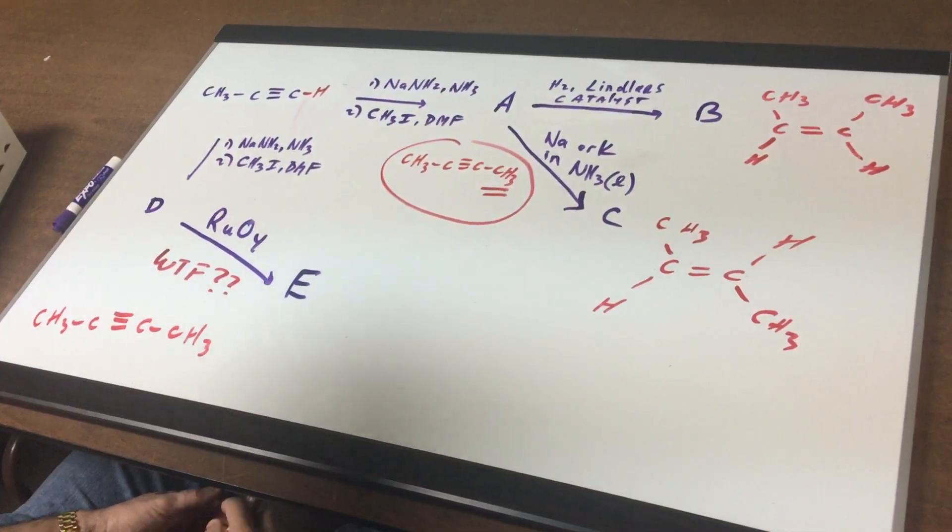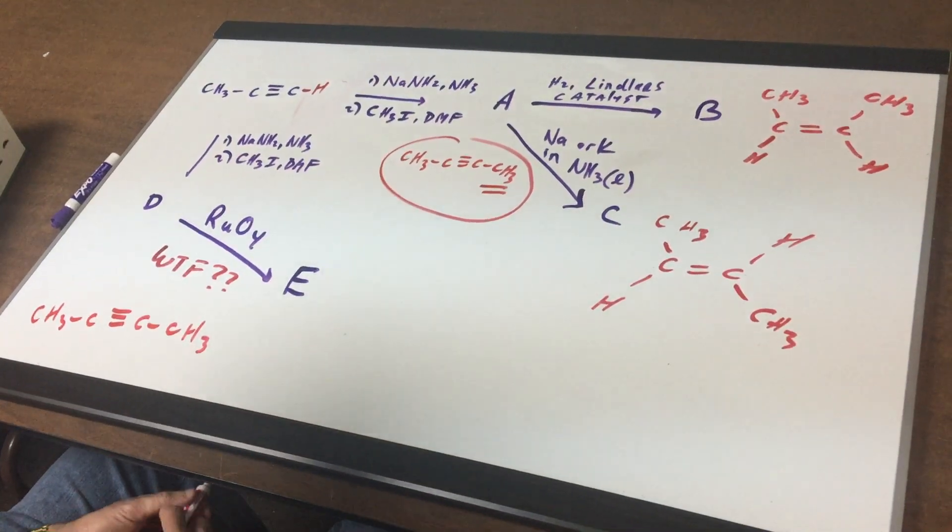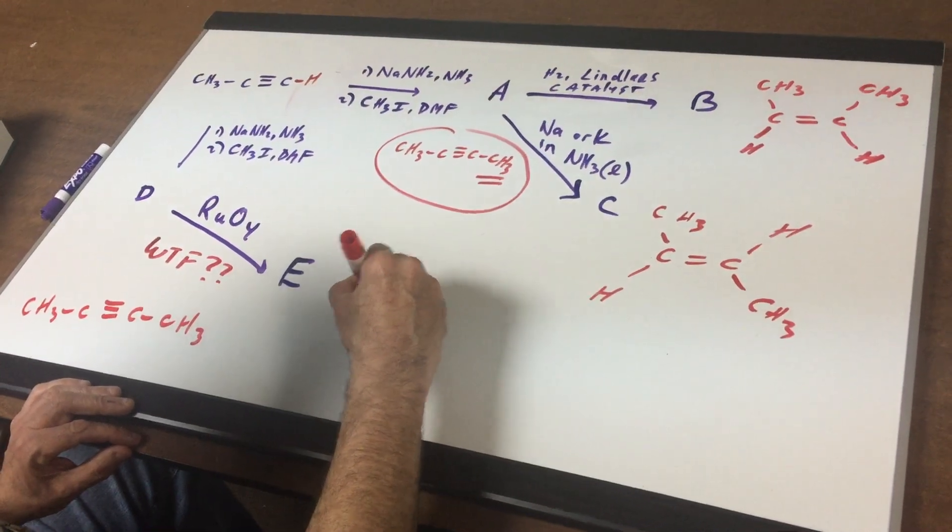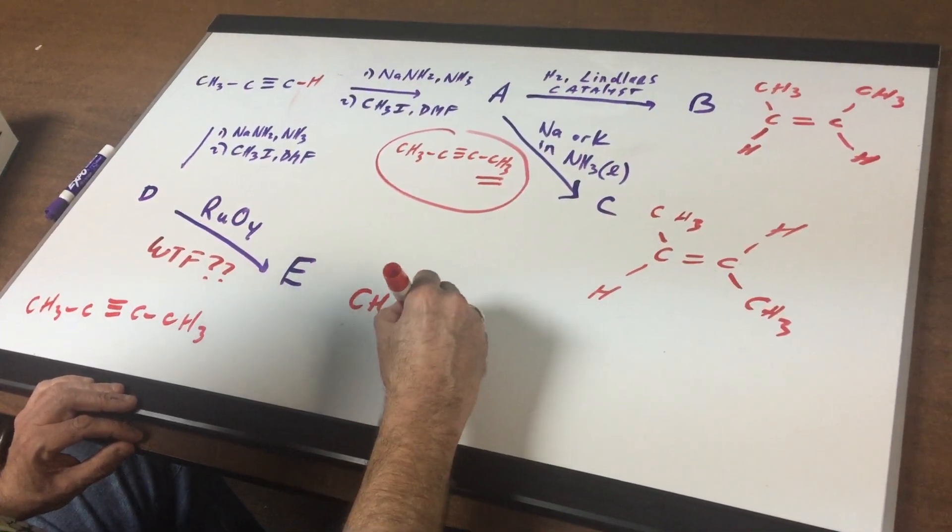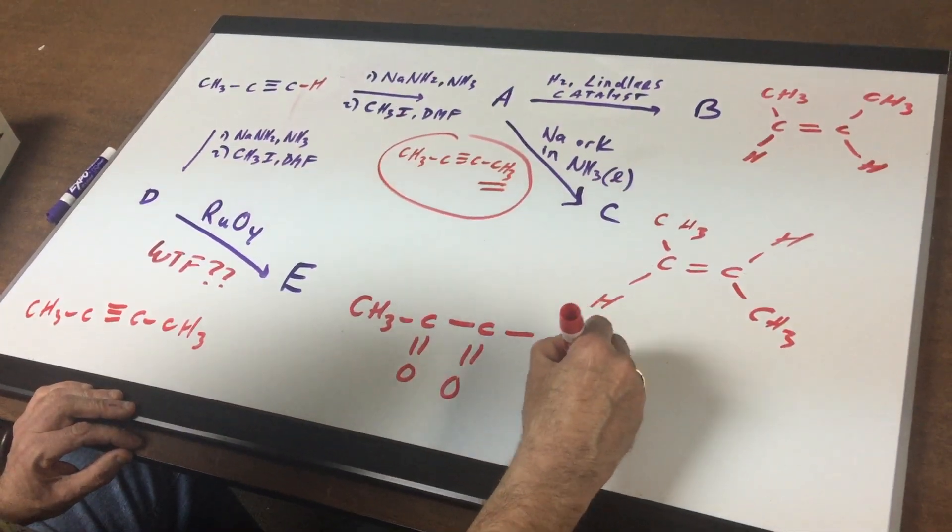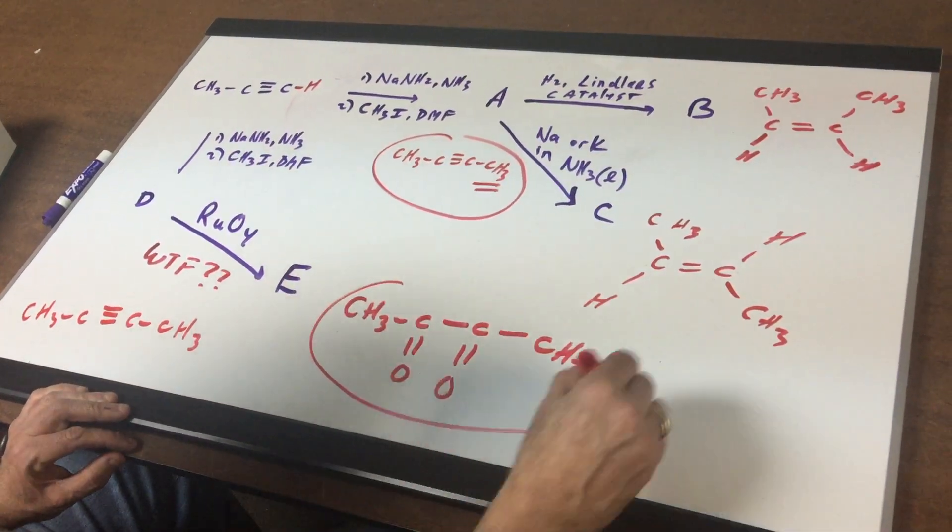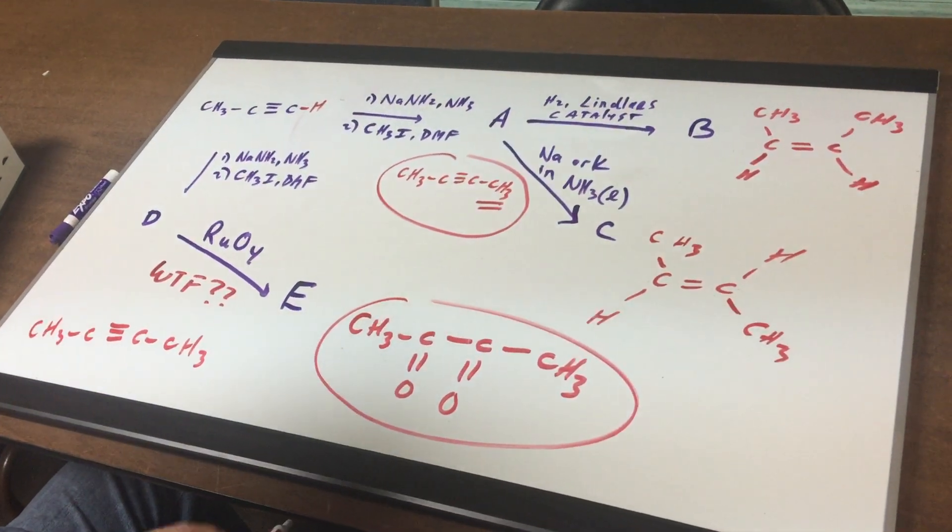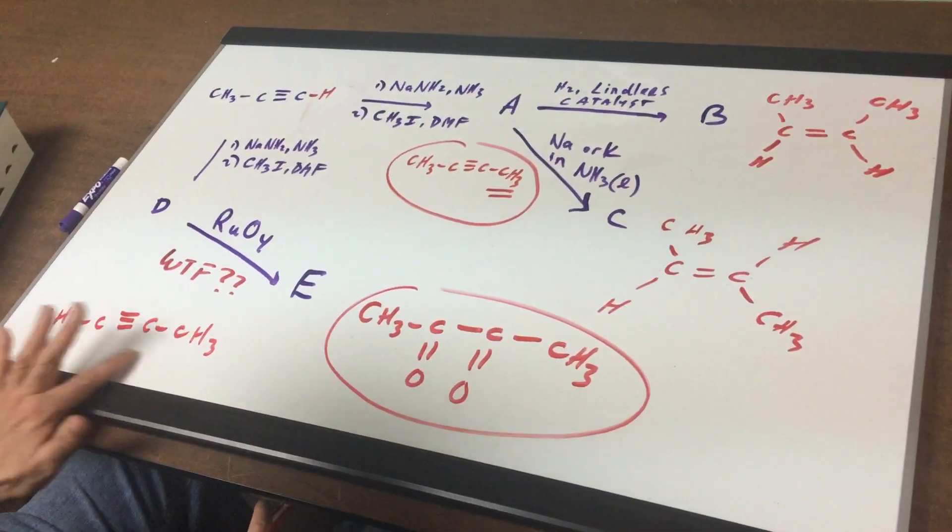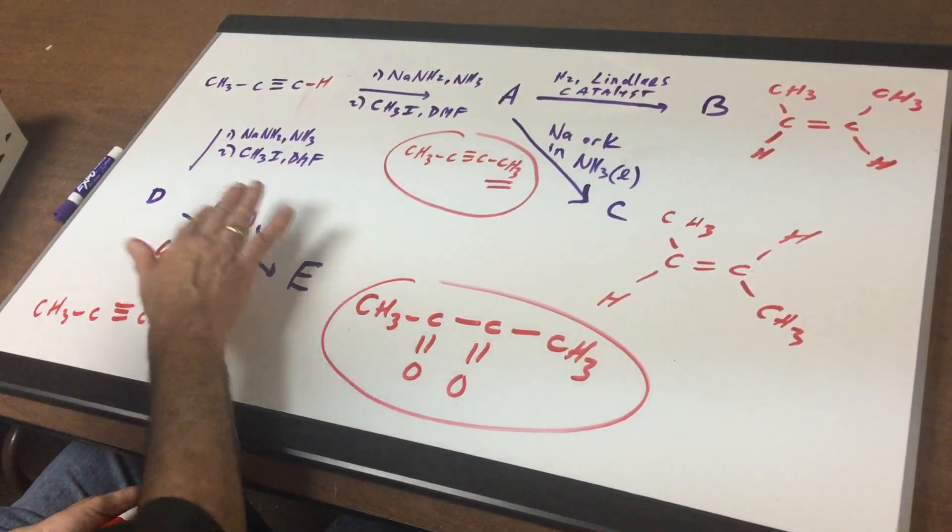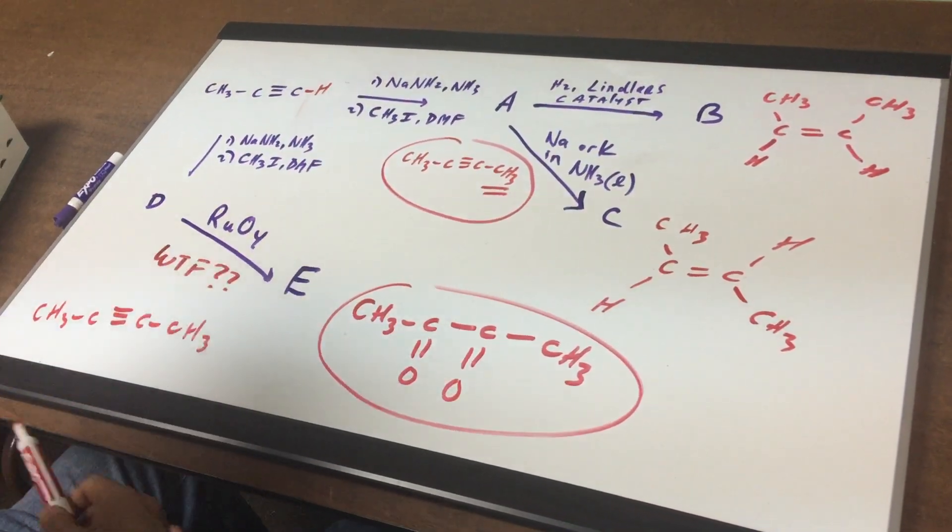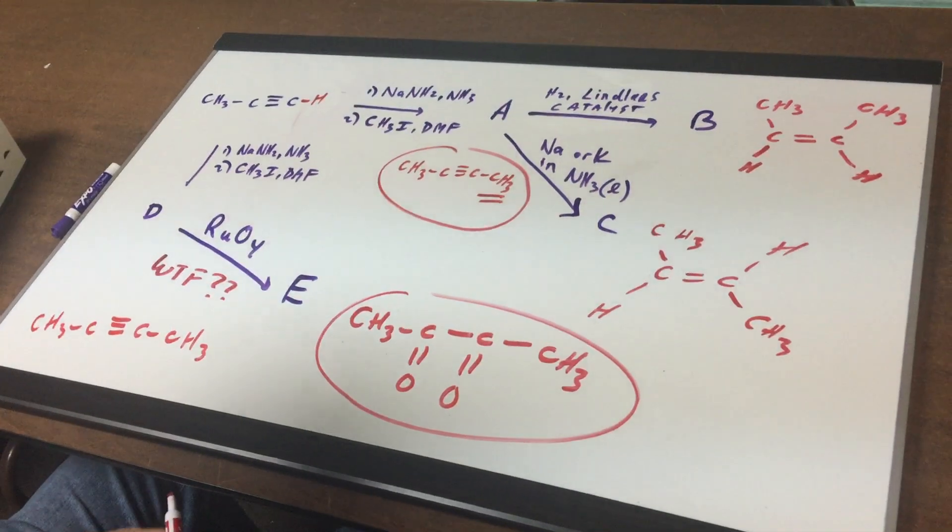This compound is called ruthenium tetroxide and what it does it's an oxidizing agent and watch what you get. Oh boy is that weird. So as you can see it ends up giving me a diketone. So if you ever want to get a diketone from an alkyne that's internal all you would do is treat it with this oxidizing agent and you are home. I don't think you'll see that in the test but all the rest of this is a sure bet.